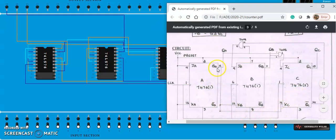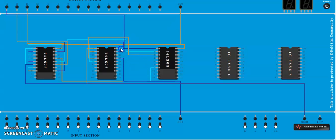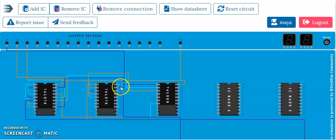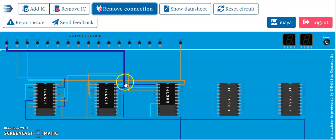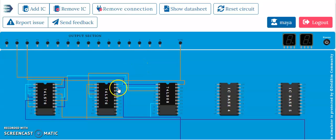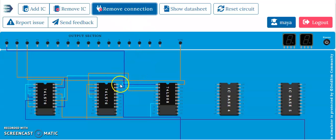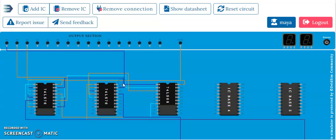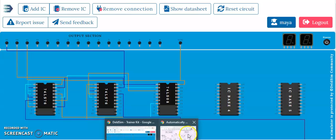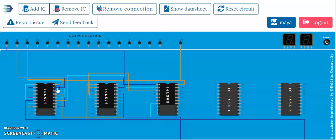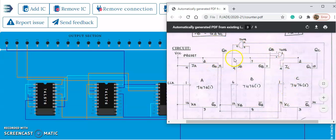KC is pin 16 of the second IC and has to be connected to pin 15 of the first IC. Click on pin 16 input, then remove that connection — be careful when removing connections. Pin 16 has been removed. Now connect from pin 15 of the first IC to pin 16 of the second IC. That connection is done.